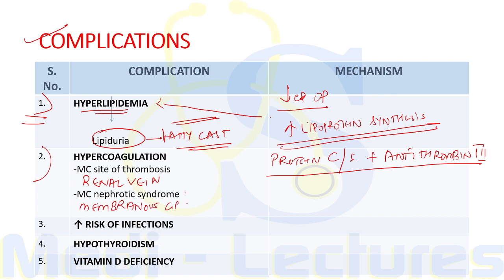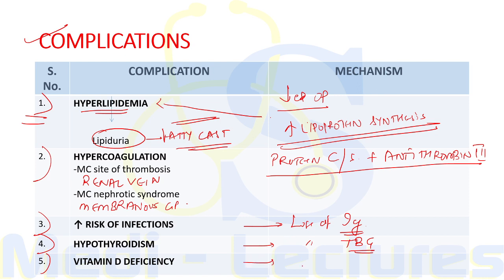The third complication is increased risk of infection due to loss of immunoglobulins. There is also hypothyroidism due to loss of thyroid binding globulin in the urine. Finally, vitamin D deficiency occurs leading to osteomalacia, due to loss of calciferol binding protein.